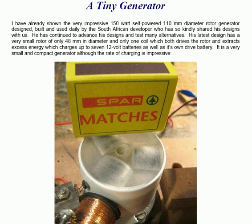This is a document describing a very small generator which is particularly effective. I have already shown the very impressive 150 watt self-powered 110mm diameter rotor generator designed, built and used daily by the South African developer who has so kindly shared his designs with us. He has continued to advance his designs and test many alternatives. His latest design has a very small rotor of only 48mm in diameter and uses only one coil which both drives the rotor and extracts excess energy which charges up to seven 12 volt batteries as well as keeping its own drive battery charged up. It is a very small and compact generator although the rate of charging is impressive.